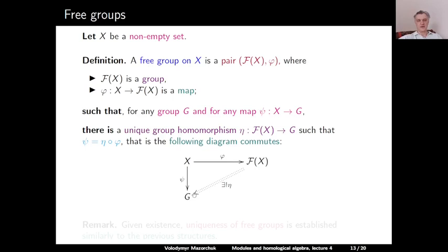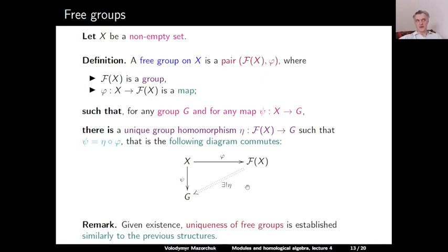This definition is again very similar to the three previous free structure definitions. Exactly as before, it is not clear that free groups exist. However, exactly the same argument as in the previous cases shows that if a free group exists, it is unique up to a unique isomorphism. So uniqueness is a general argument valid for essentially any free structure.